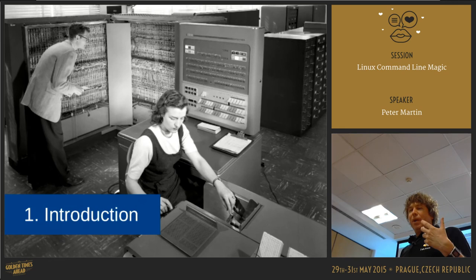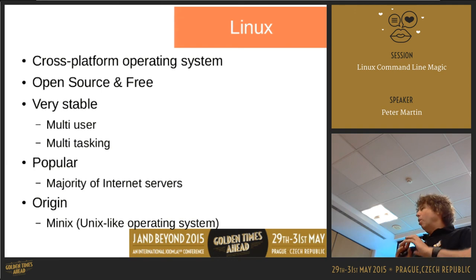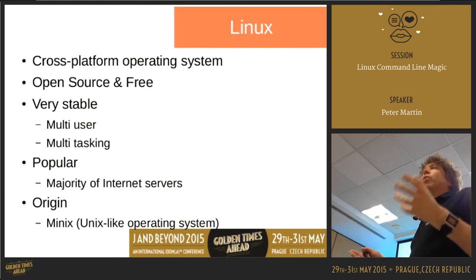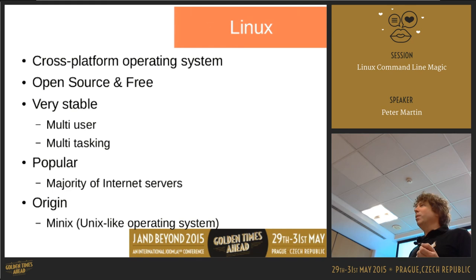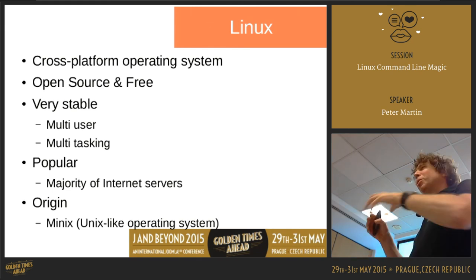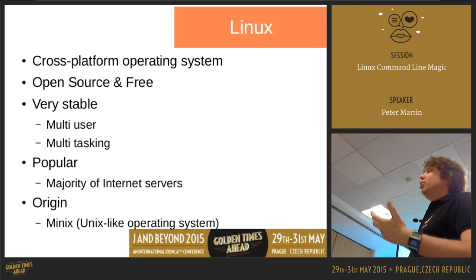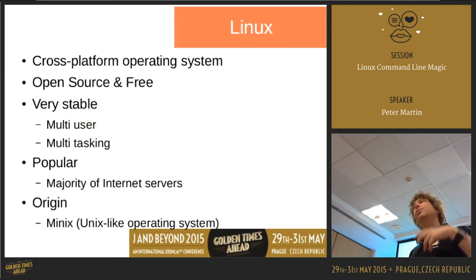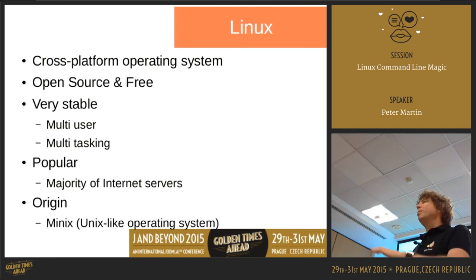Linux is an operating system for all kinds of devices and all kinds of different CPUs. You probably have an Intel or maybe AMD processor, but if you have a Raspberry Pi it's an ARM processor. It's also available on other devices — like TomTom car navigation has Linux inside; you don't see it, you only see a layer above it. Linux is open source, also free, and really stable because it was derived from Unix, which was made for mainframe computers where multiple people had to do work at the same time.